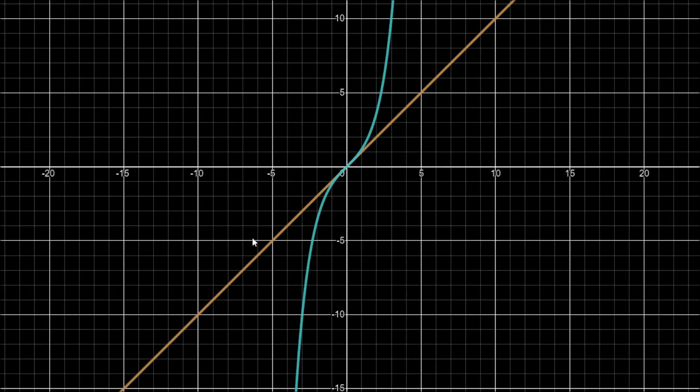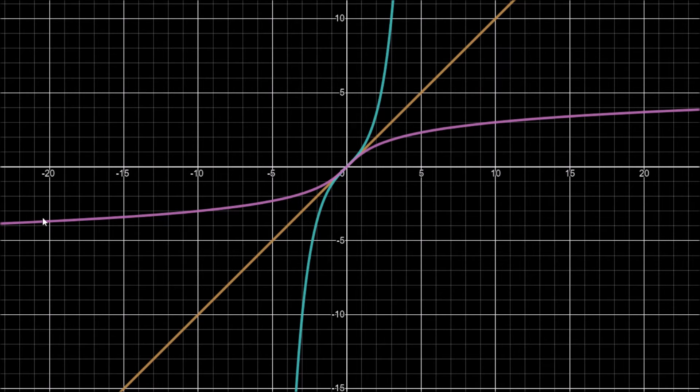We start off with the sinh x function. Now we have to find the inverse of this in order to get that arc sinh. So we reflect it through the line y equals x, and when we reflect it through the line we get this function here which is our arc sinh x.